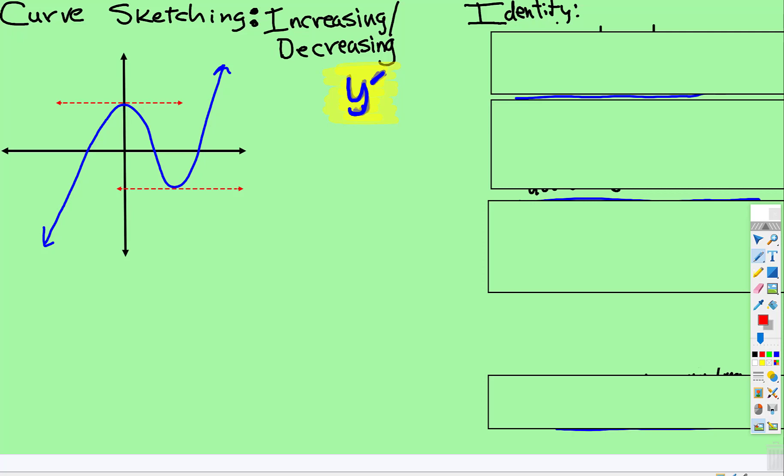Okay, now we're going to get into a little bit more detail about the curve sketching process. The first part of the curve sketching process is finding the intervals of increasing and decreasing and the pieces that are attached to that.